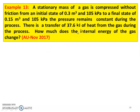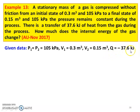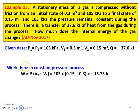There is a heat transfer of 37.6 kJ from the gas during the process, so heat is rejected: Q = −37.6 kJ. Given: P1 = P2 = 105 kPa, V1 = 0.3 m³, V2 = 0.15 m³. Work done during the constant pressure process: W = P(V2 − V1) = 105 × (0.15 − 0.3) = −15.75 kJ.